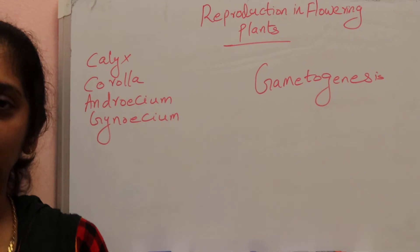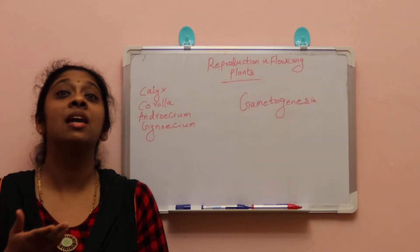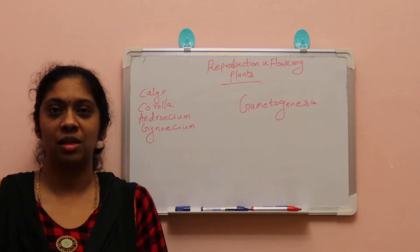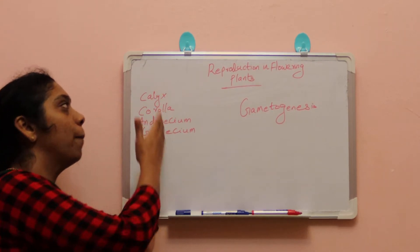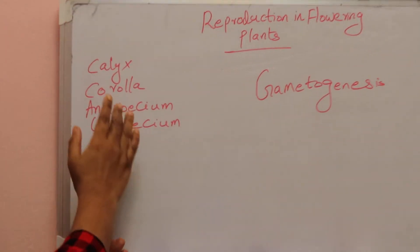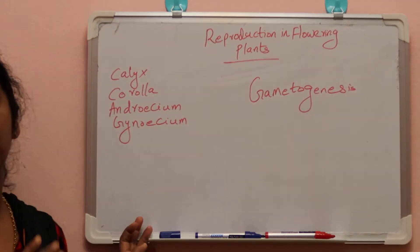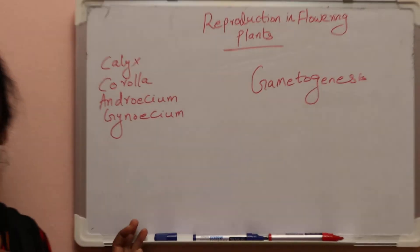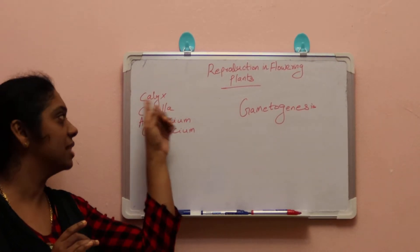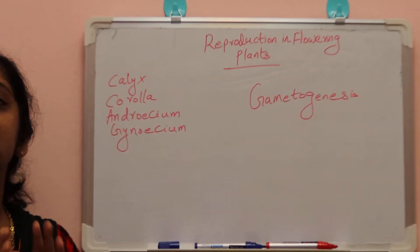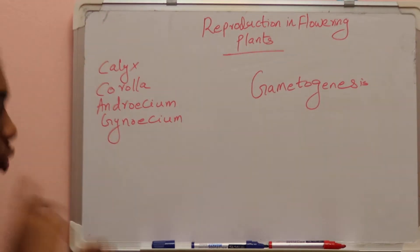After gametogenesis, we need to know the structure of the flower, then pollination takes place, and only then fertilization will take place. Typically, a flower consists of four parts: calyx, corolla, androecium, and gynoecium. The flower which has all these four parts is called a perfect flower or a complete flower.